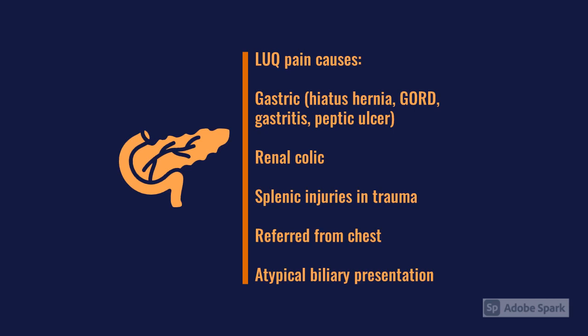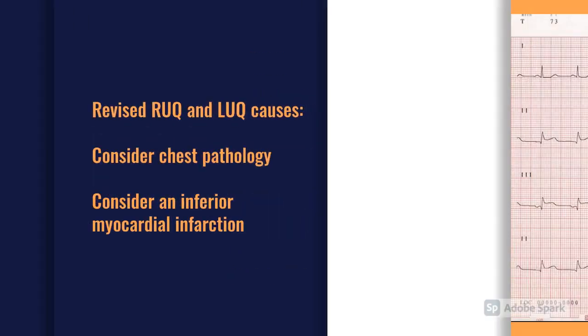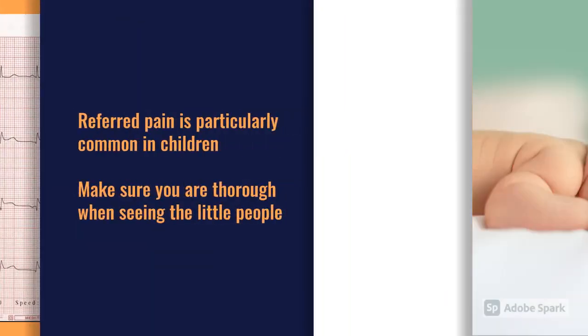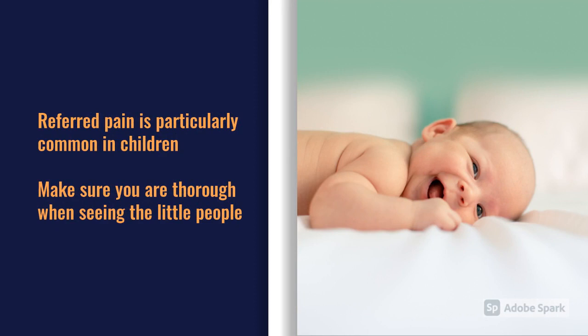Regarding referred chest pain, this applies to both upper quadrants. You really have to think about chest referral processes in those upper abdominal areas — particularly important for MI and myocardial infarctions, but also quite common in children where lower respiratory tract infections can cause localized upper abdominal pain. Moving to the left lower quadrant, this is a really common presentation.